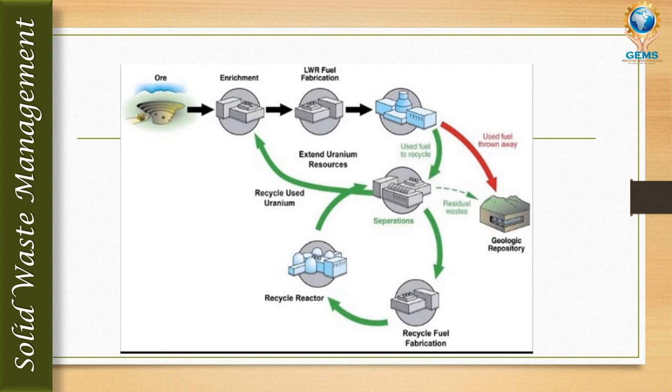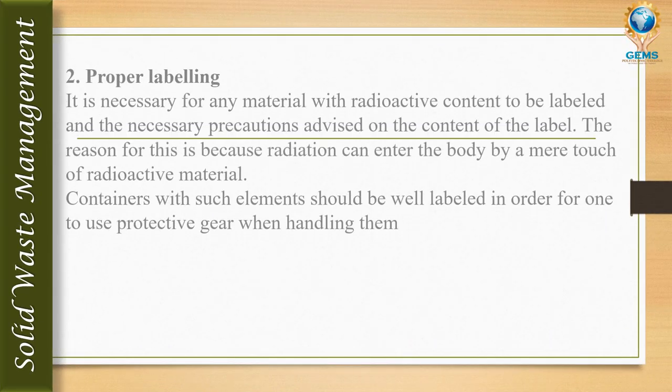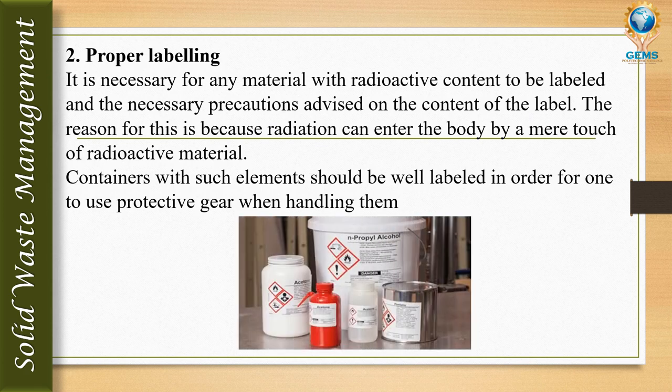The next solution is proper labeling. Proper labeling means we have to label chemicals with their correct names. If a label is missing or incorrect, a person might use the wrong chemical, which could lead to serious harm. For example, if someone picks up a bottle of sulfuric acid thinking it is a normal agent, or picks up hydrochloric acid by mistake, they could suffer severe burns.